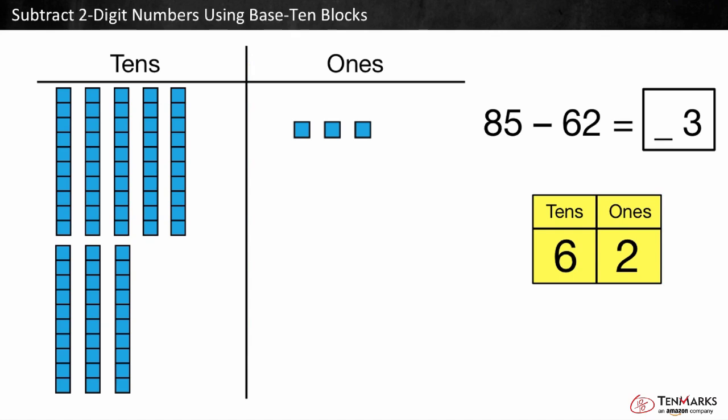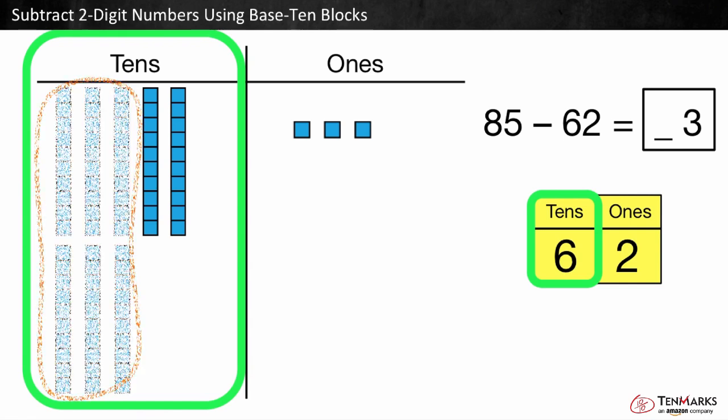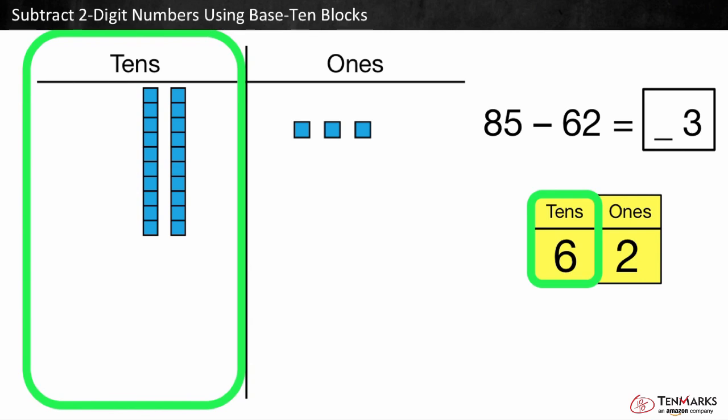Now we subtract the 10s. Can we take six 10s away from eight 10s? Yes, 8 minus 6 is equal to 2. We have two 10s left.